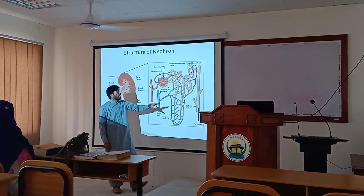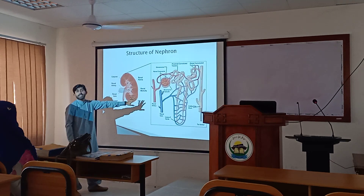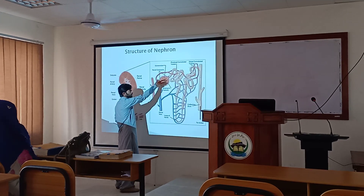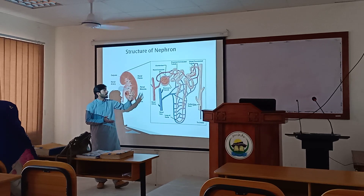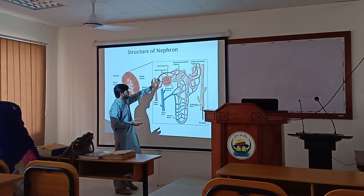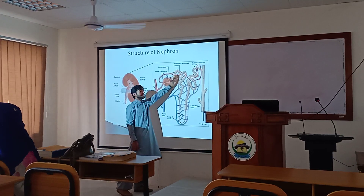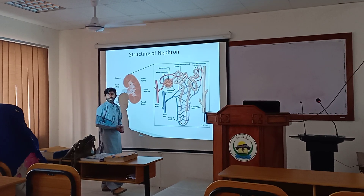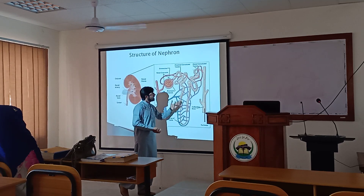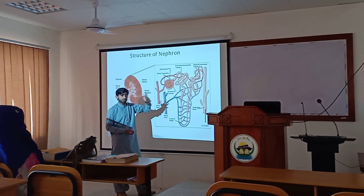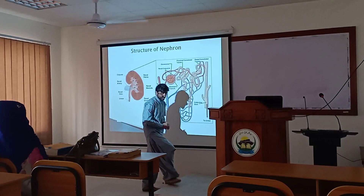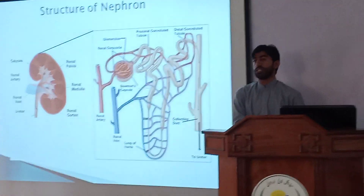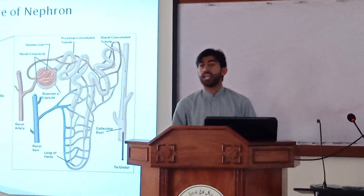The nephron's structure includes the Bowman's capsule, glomerulus, proximal convoluted tubule, loop of Henle, and the collecting duct. Each unit, from the outer structure, is linked to the relative parts. From the proximal convoluted tubule there is a range of absorption. The loop has an extension — this is a very interesting feature. The collecting duct is where waste materials are collected. This is the structure of the nephron.